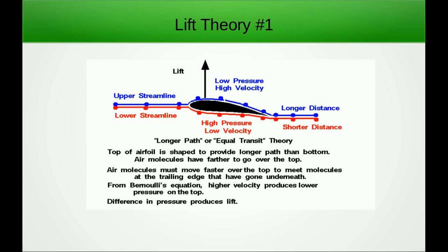Lift theory number one, which is also known as the longer path or equal transit theory. Please focus on the diagram shown here. The air molecules that are on the leading edge has to actually travel through the distance and meet here at the trailing edge. Now airfoil is made in such a way that the upper surface has the longer path and lower surface has the lesser path. Now since the path is longer on the upper surface, the air molecule has to travel faster to meet the red molecule at the trailing edge.